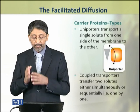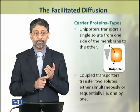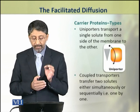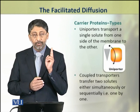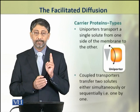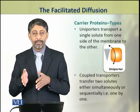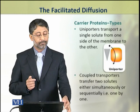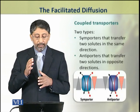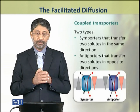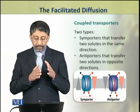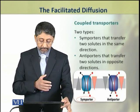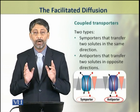Uniporters transport a single solute from one side of the membrane to the other. Coupled transporters have the ability to transfer two solutes, with symporters transferring them in the same direction and antiporters transferring two solutes in opposite directions.